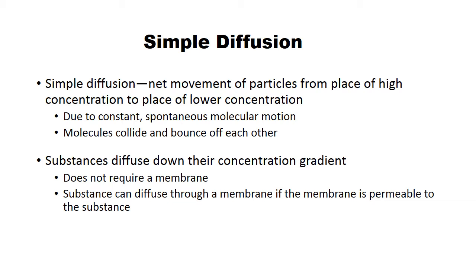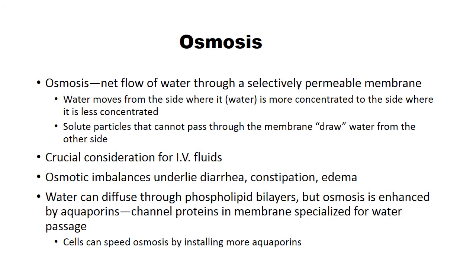Putting food coloring in water is another great example of diffusion. Any particle moves from a highly concentrated area to a lower concentrated area — down the concentration gradient from high to low. Importantly, simple diffusion does not require a selectively permeable membrane. This is where students confuse diffusion with osmosis — osmosis does require a selectively permeable membrane.